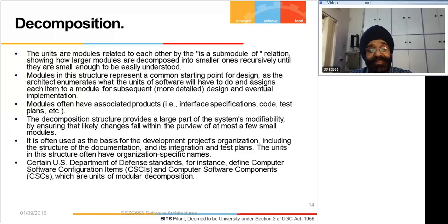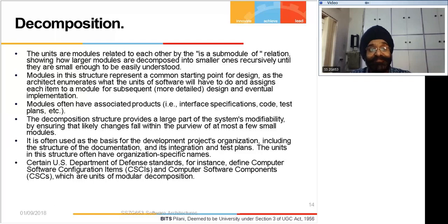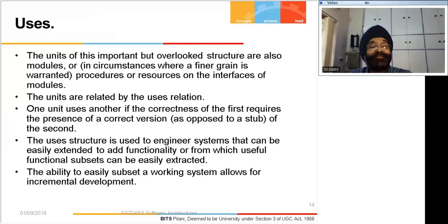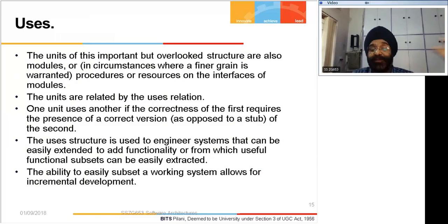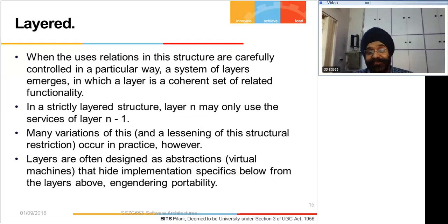The US Department of Defense defines computer software configuration items and computer software components, which is basically a module decomposition structure - they like to pay for individual modules. The uses structure describes which module uses which module. For testing modules you use stubs normally, and to test a sub-component you normally use a workbench. The actual inter-usage relationship between components is called the uses structure. Then there's the layered structure - layer N using layer N-1, the concept of virtual machine abstraction.